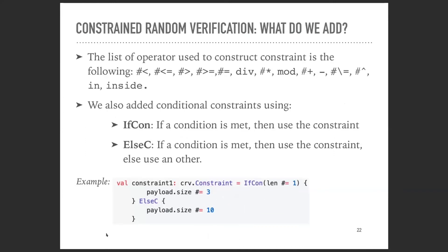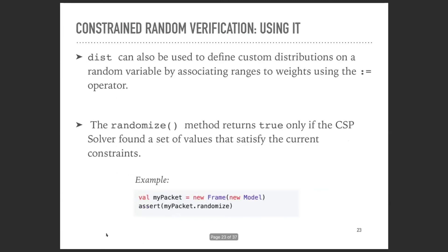Here's the list of operators that can be used in our constraint programming language. We can also have conditional constraints, which are defined using either ifcon or elsec. As the name implies, it's a constraint that's only applied if a condition is met. Finally, this is something we added to spice things up - we have the dist operator, where we can define our own custom distributions by associating weights to value ranges. This is what I use most to define the random variables.